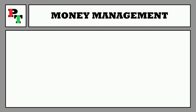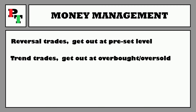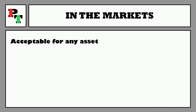Now let's look at money management and whether the MFI can help protect our capital. For reversal trades, you could exit at a fixed predetermined level — say you enter a sell when the MFI moves above 80, then exit when it comes down below 65. For trend-based strategies, you could exit when the MFI becomes overbought or oversold — if you're in a buy trade and the MFI moves above 80, that's your signal to exit as price is overbought, and vice versa for a sell trade.